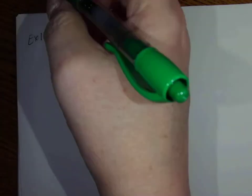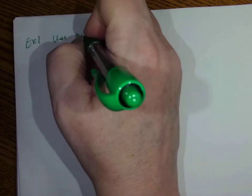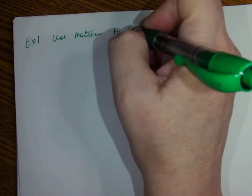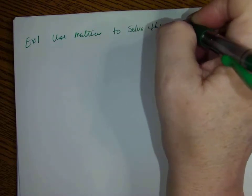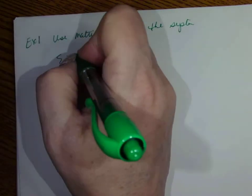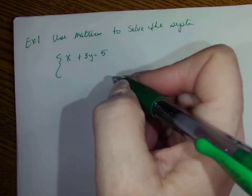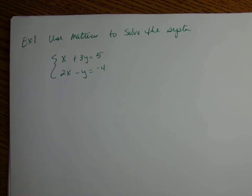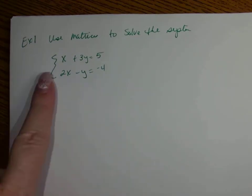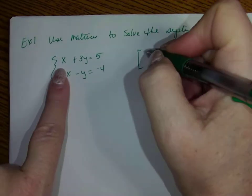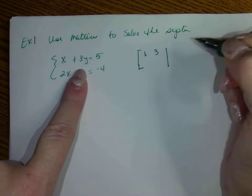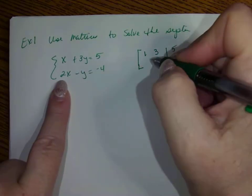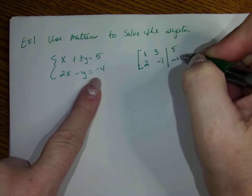Now that we've talked about what a matrix is, we're going to do some examples. Example one: we're going to use matrices to solve the system x plus 3y equals 5 and 2x minus y equals negative 4. The first thing we need to do is write the matrix: 1, 3, vertical line, 5 for the first row, and 2, negative 1, negative 4 for the second row.